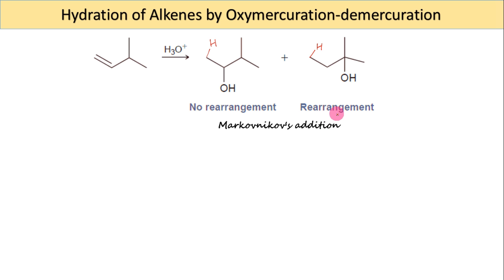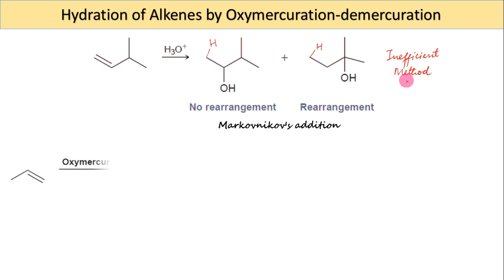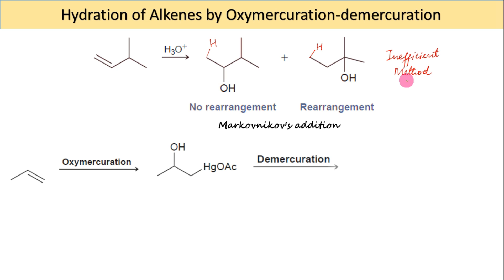In cases where protonation of the alkene ultimately leads to carbocation rearrangements, acid-catalyzed hydration is an inefficient method for adding water across the alkene. There are many other methods that can achieve Markovnikov's addition of water across an alkene without carbocation rearrangements.